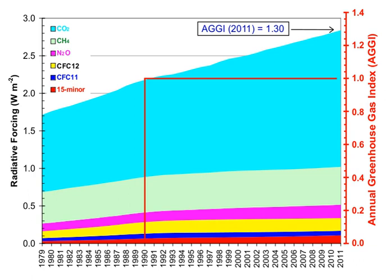The vast majority of anthropogenic carbon dioxide emissions, i.e., emissions produced by human activities, come from combustion of fossil fuels, principally coal, oil, and natural gas, with additional contributions coming from deforestation, changes in land use, soil erosion, and agriculture including livestock.